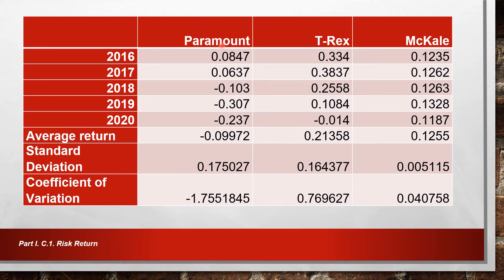As you can see, Paramount actually has the lowest returns and the highest risk compared to T-Rex and McCale. If Paramount were to go into merger and acquisition, comparing its risk and return to peer companies would be the starting point. T-Rex has the highest return at around 21% compared to McCale's 12–13%, while McCale has lower risk at 0.005 versus T-Rex's 16%.